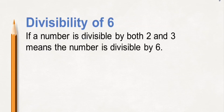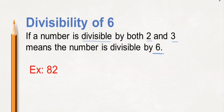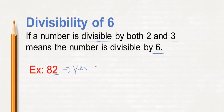Divisibility of 6. If a number is divisible by both 2 and 3, the number is divisible by 6. Look at an example: 802. Whether 82 is divisible by 2? It is divisible by 2 as it has 2 at the ones place.